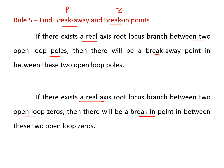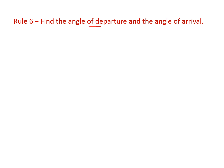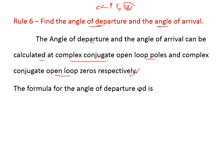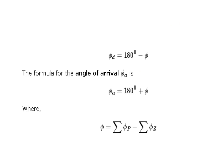The sixth rule is to find the angle of departure and angle of arrival. These concepts arise due to the presence of complex conjugate poles and zeros. If complex conjugate poles are present we get the angle of departure; if complex conjugate zeros are present we get the angle of arrival. The formula for angle of departure is: φ_d = 180 − φ.